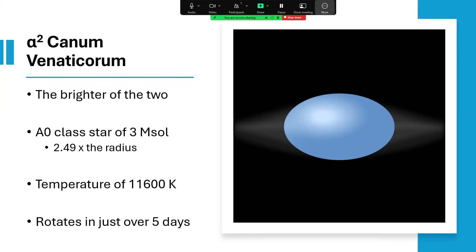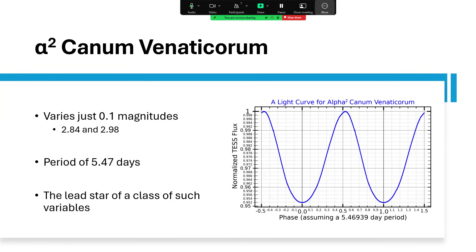These A-class stars are also extremely hot. They have a temperature of 11,600 degrees for this particular one. We see the magnitude vary slightly, just 0.1 magnitude, 2.84 to 2.98 if we want to be precise. The light curve is shown there. The total flux measured from the TESS system has varied down to about plus or minus two and a half percent, so a fairly modest swing.